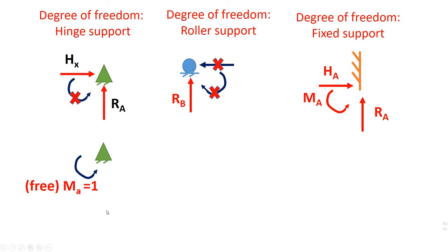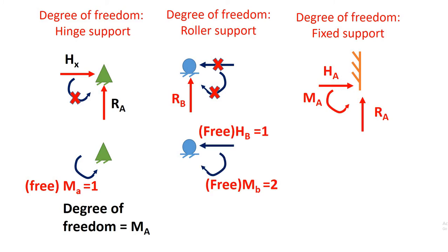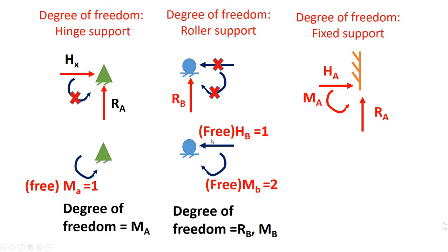So the degree of freedom for roller support is one, and that is moment. For the roller support, the free reactions are two — that is horizontal reaction and moment. So the degree of freedom for roller support is two: horizontal reaction and moment.